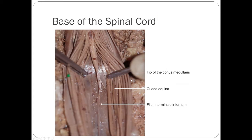Looking at a real spinal cord image, you can see the tip of the conus medullaris, which marks the actual bottom of the spinal cord ending between L1 and L2. The long filum terminale is visible, eventually becoming part of the coccygeal ligament. The cauda equina is clearly visible as multiple strand-like dorsal and ventral roots that came off higher on the spinal cord and travel down to exit through the intervertebral foramen.